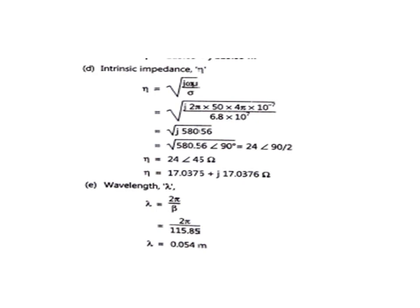Next, we calculate the intrinsic impedance eta. For good conductors, the formula is eta equal to under root of (j omega mu divided by sigma). Substituting j, omega as 2 pi f with f equal to 50, mu equal to 4 pi into 10 raised to minus 7, and sigma equal to 6.8 into 10 raised to 7, we proceed to solve the expression.